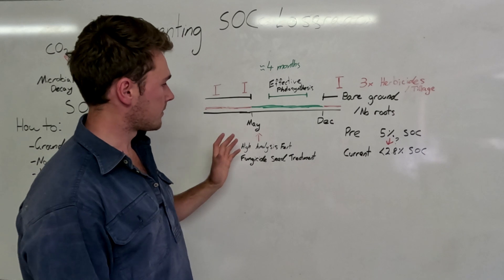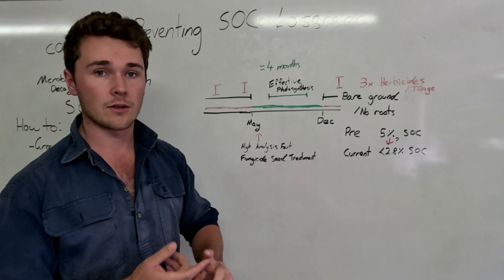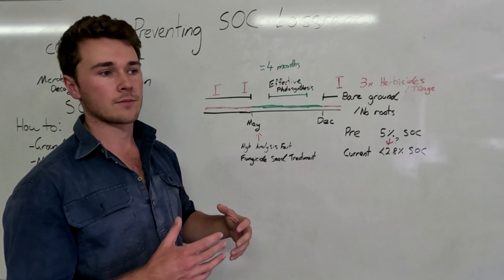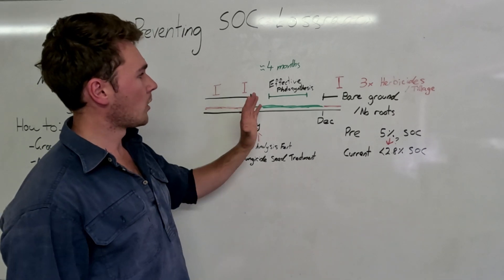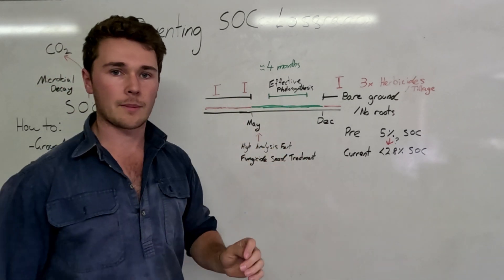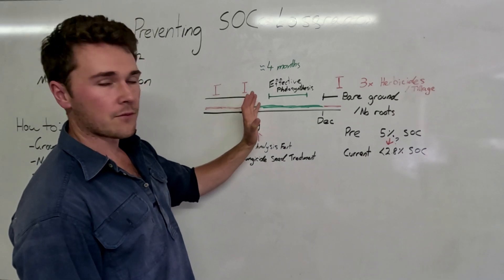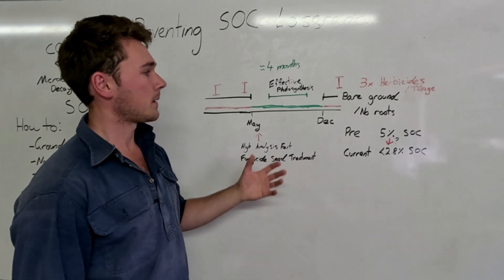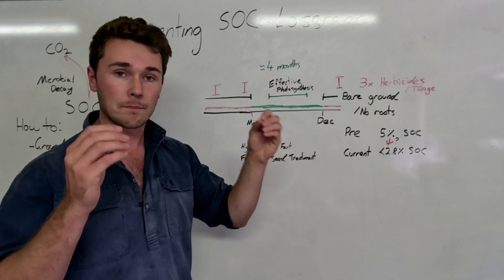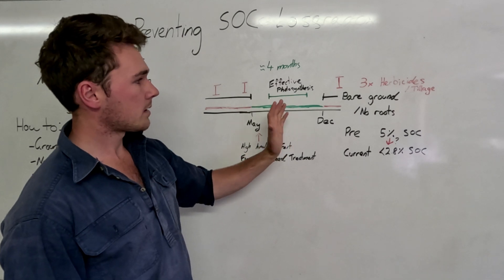Then from there we're planting around May. We're going to put down our fertilizer, put a seed coat fungicide on our seed, and then plant it. That's going to take a little while to develop a full canopy and establish. In that time we might apply another herbicide. During the growing season we might apply fungicide and more high analysis fertilizer. We're going to get around four months of effective photosynthesis where the plants are actually photosynthesizing and taking those sugars that it produces and pumping it into the soil.